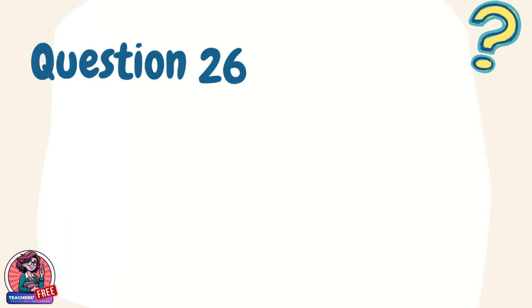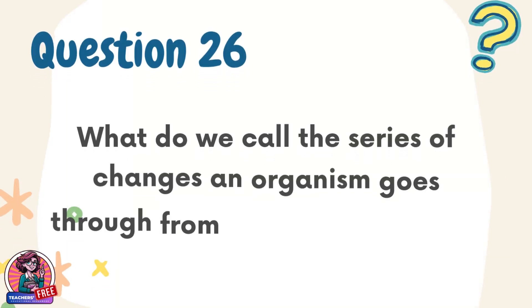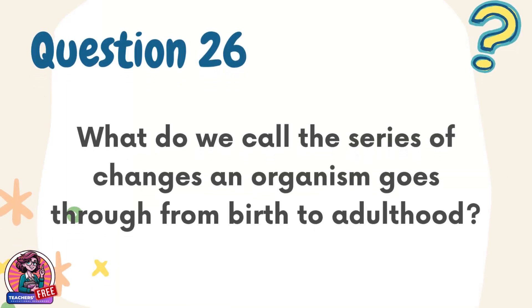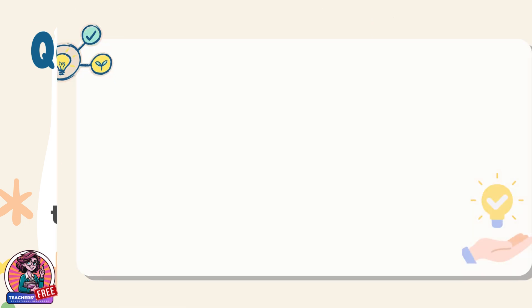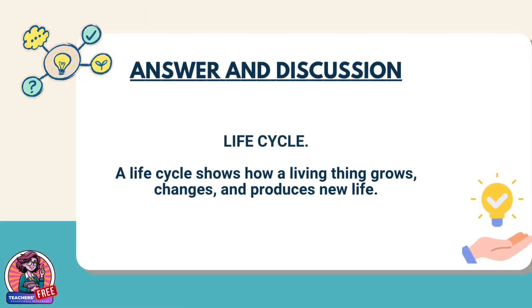Question 26. What do we call the series of changes an organism goes through from birth to adulthood? Answer: Life cycle. A life cycle shows how a living thing grows, changes, and produces new life.